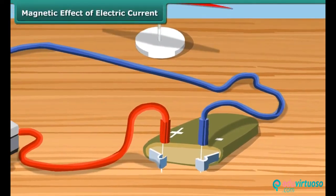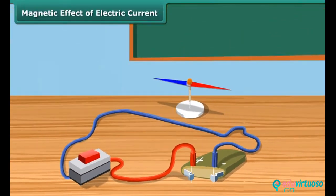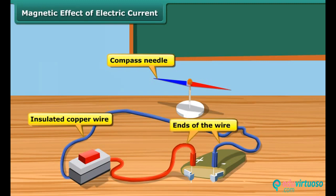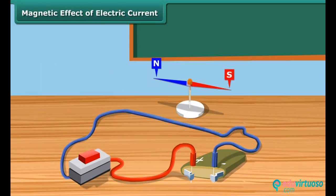When an electric current is passed through a wire, it behaves like a magnet. Let us perform a simple experiment to understand it. Take a thin insulated copper wire and fix it in the north-south direction. Place a compass needle, which is a tiny magnet, under the wire. Connect the two ends of the wire to a battery. When no current is flowing in the wire, the magnetic needle is parallel to the wire and points in the usual north-south direction.